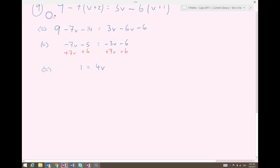Last step, 1 equals 4v. To get v on its own, I need to do the opposite of multiplying by 4, which is to divide by 4. Therefore, 1 quarter equals v. If you want to write v equals 1 quarter, that is, of course, fine too.